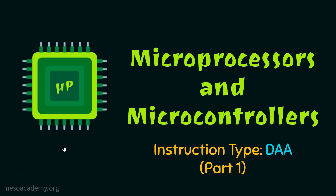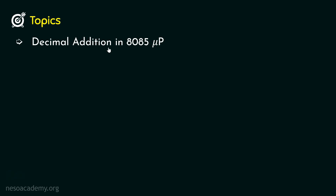Hello everyone and welcome to the session on instruction type DAA part 1. In this session and the upcoming session we are going to learn about the arithmetic instruction DAA. The instruction type DAA helps us perform decimal addition in the 8085 microprocessor. Before learning about the instruction, we need to clear some concepts, so today we are going to cover the topic of BCD numbers.